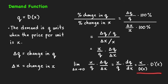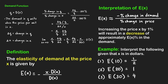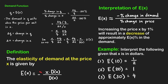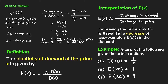This result is the basis of the definition of the elasticity of demand. The elasticity of demand at price x is given by e of x, which equals the negative of x times d prime of x, divided by d of x. We include the negative sign because d of x is normally a decreasing function, so d prime of x is usually less than zero. By inserting this negative sign, we make the elasticity function non-negative, which is easier to work with. Note that other textbooks use the absolute value of x times d prime of x over d of x to achieve the same result.